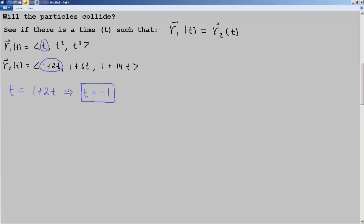And then what we'll do is we'll just find r₁ of negative 1. And that's just going to be negative 1, and then negative 1 squared is positive 1, and then negative 1 to the third. So this is just negative 1, positive 1, negative 1. And then we'll do the same, r₂ of negative 1. This is going to be 1 plus 2 times negative 1, 1 plus 6 times negative 1, 1 plus 14 times negative 1. And this is equal to negative 1, negative 5, negative 13.